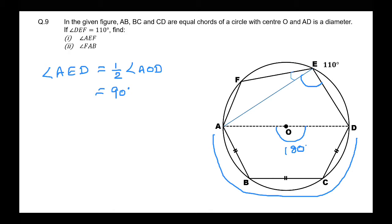So if angle AED is 90 degrees, then we can find angle AEF because it is the difference of two angles: 110 degrees minus 90 degrees. So our first answer is angle AEF equals 20 degrees.